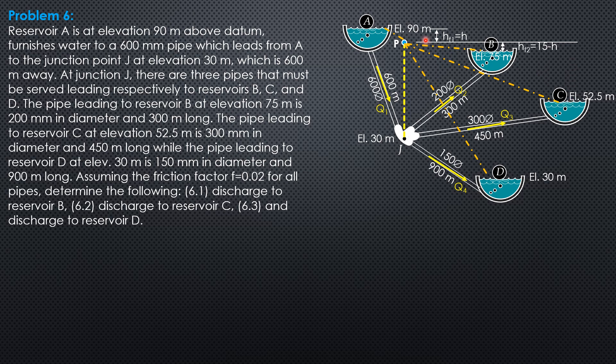HF3: 90 minus 52.5 is 37.5, so HF3 is 37.5 minus H. And lastly, 90 minus 30 is 60, so the head loss in pipe 4 is HF4 = 60 minus H.